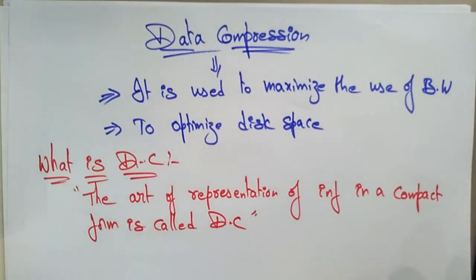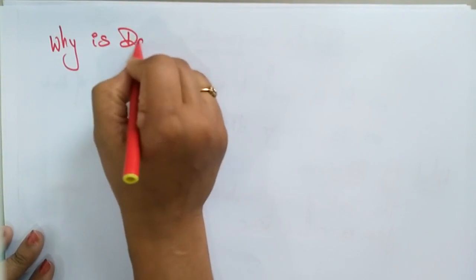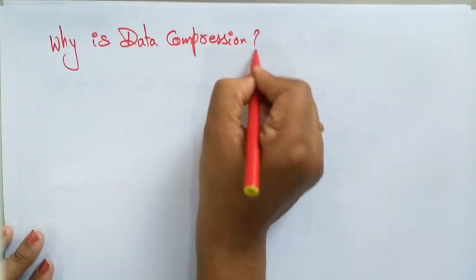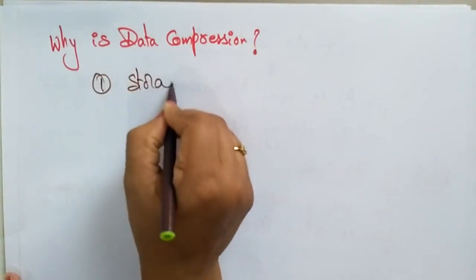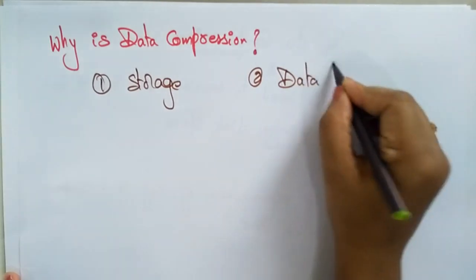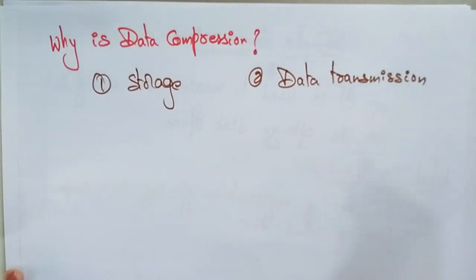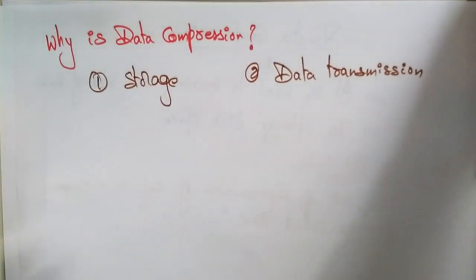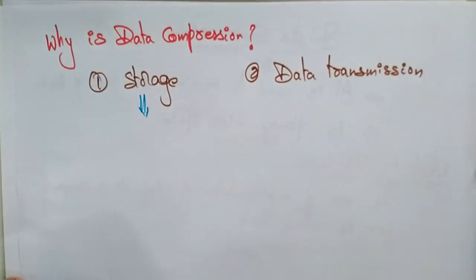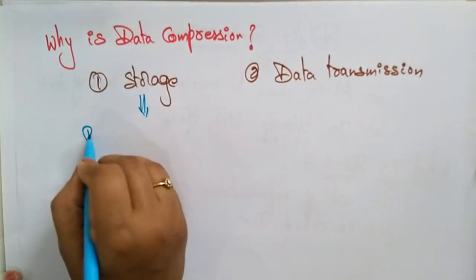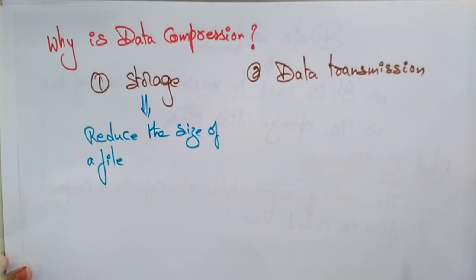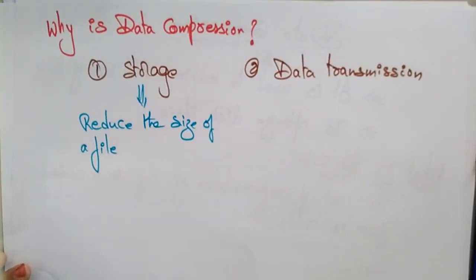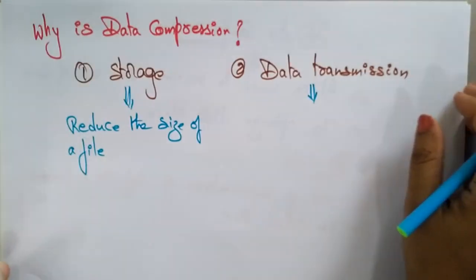Why do we require data compression? Why is it necessary? Data compression is required for two reasons: for the sake of storage and for the sake of data transmission. For storage, data compression reduces the size of a file — it reduces the storage space required to store a particular file.